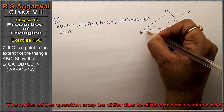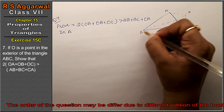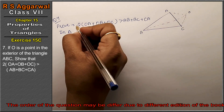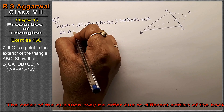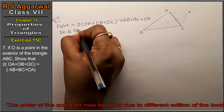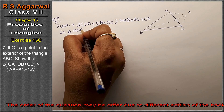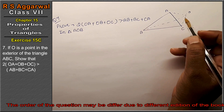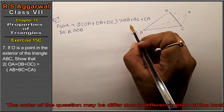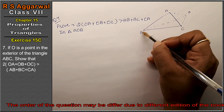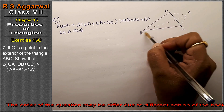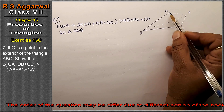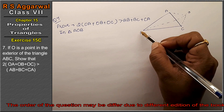Let's see how we will do this. We will consider each triangle in turn — triangle AOB, then triangle OBC, then triangle OAC — to find the sides AB, BC, and CA.